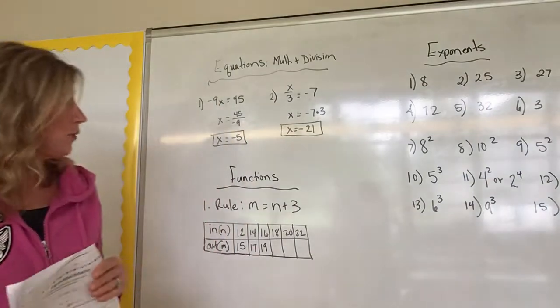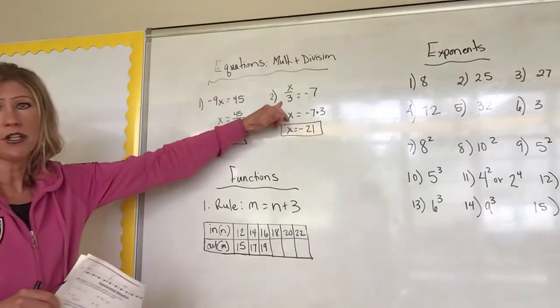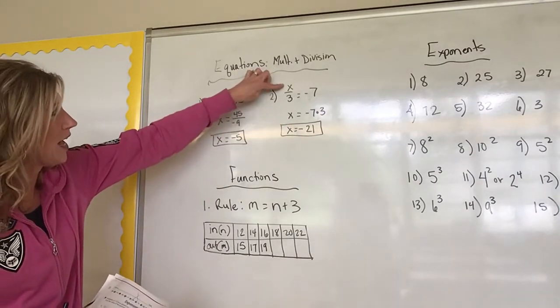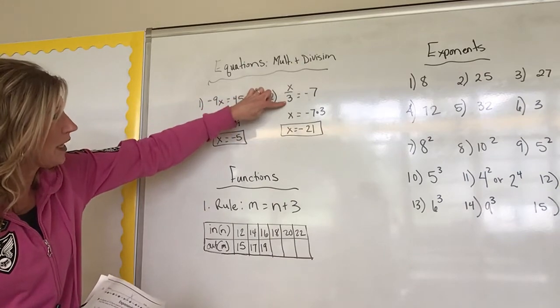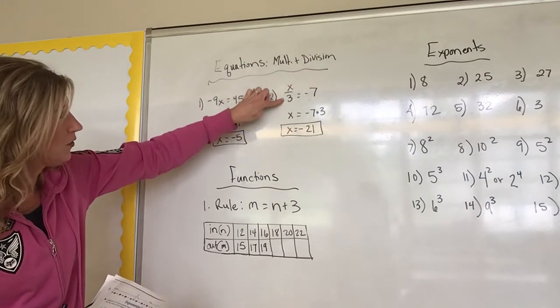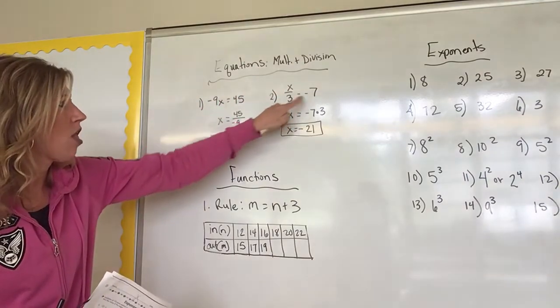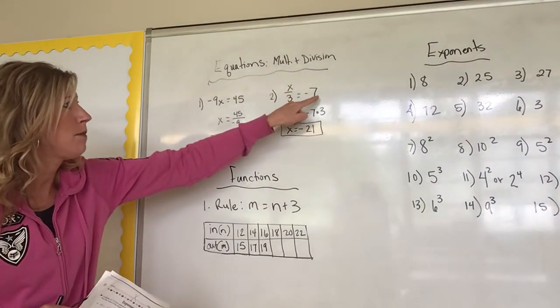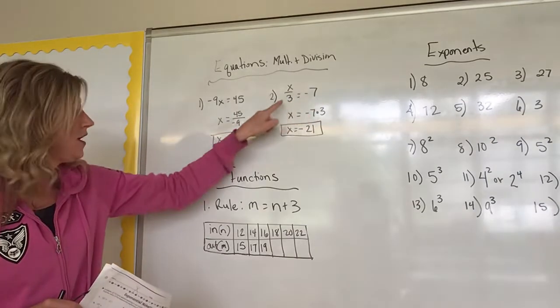Okay, so those are some rules we just need to make sure we remember. You'll have some problems that look like this, this is number 2. This is a division problem saying x, my variable, divided by 3. What times 3 gives me negative 7?